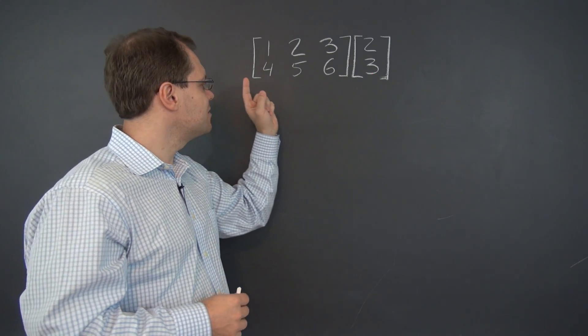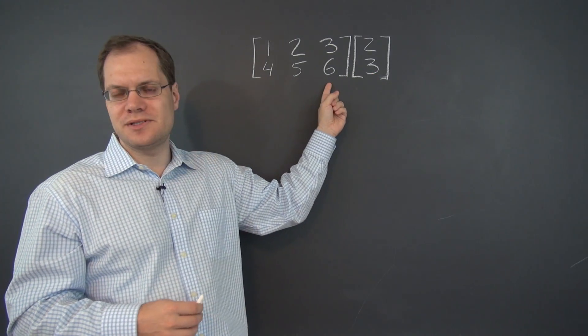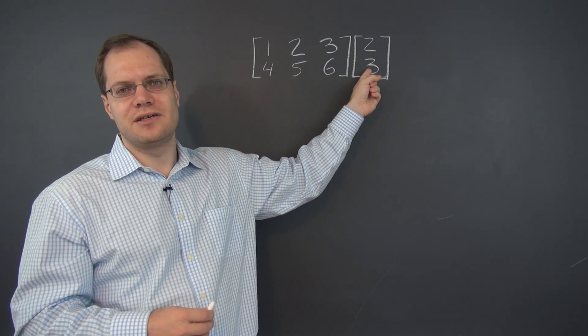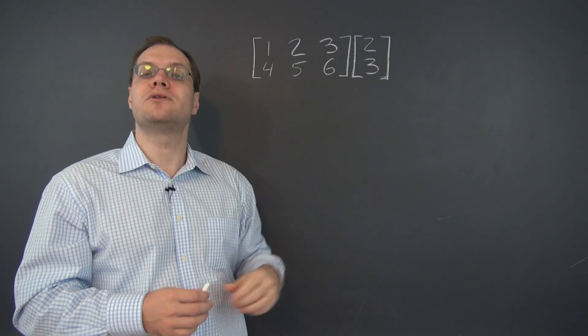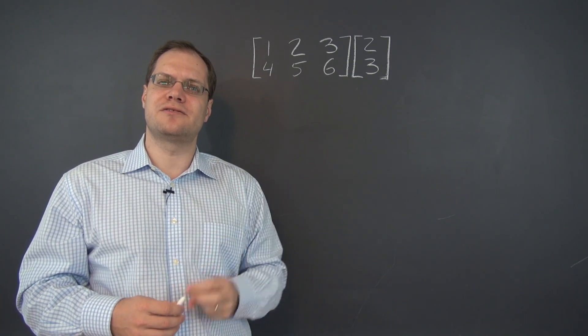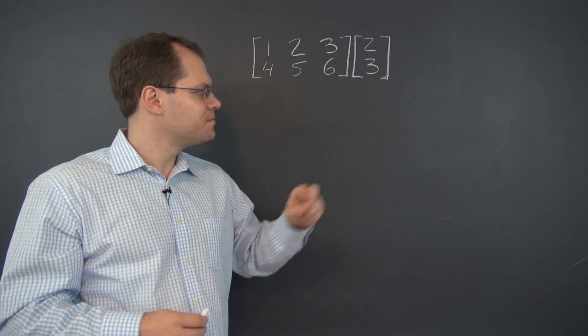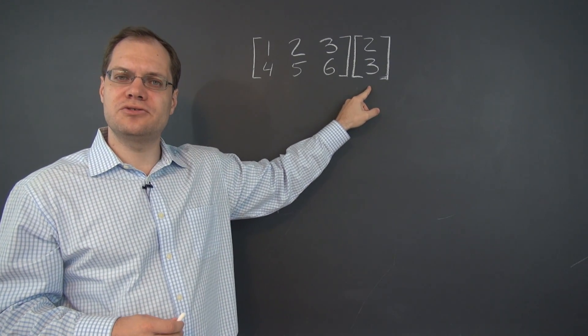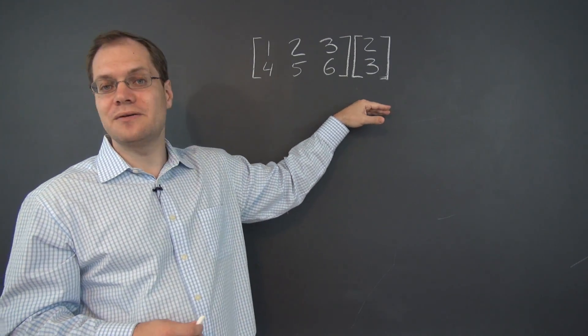Indeed, the matrix on the left has three columns while there are only two entries in the matrix on the right. So we cannot even form a legitimate linear combination with three vectors and two coefficients. This matrix would have had to have a third entry for this matrix product to be compatible.